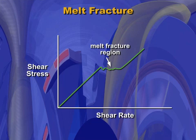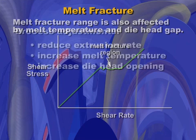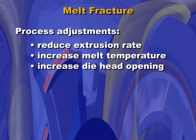The melt fracture range is also affected by the melt temperature and the die head gap. There are three processing conditions that can be adjusted to solve a melt fracture problem: reduce or increase the extrusion rate, increase the melt temperature, and increase the die head opening.